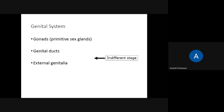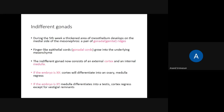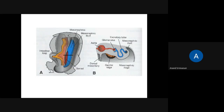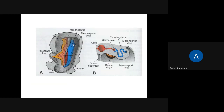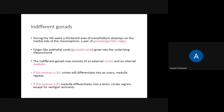The indifferent gonad stage: during the fifth week, there is a thickened area of mesothelium which develops on the medial side of the mesonephros. This is called the gonadal ridges or genital ridges. The gonadal ridge is a mesothelial elevation found on the medial side of the mesonephros. There will be finger-like epithelial cords growing into the underlying mesonephros, called gonadal cords.